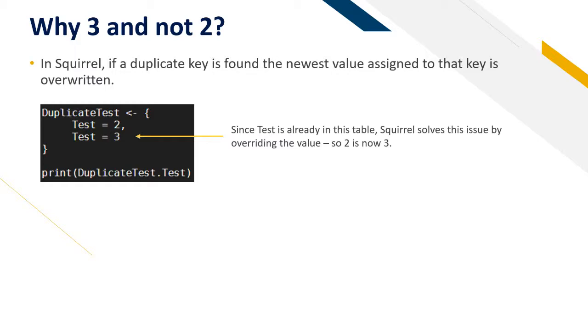So that's why we have a duplicate key. If you have a duplicate key in a table in Squirrel, it overrides it with the latest one.